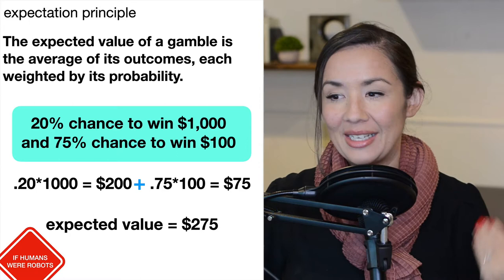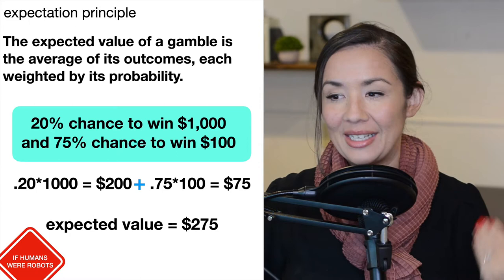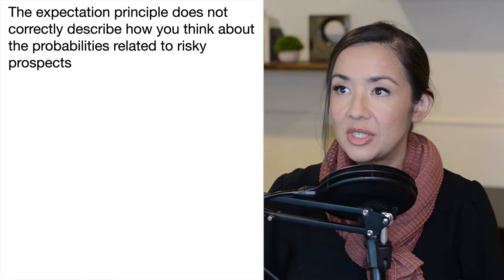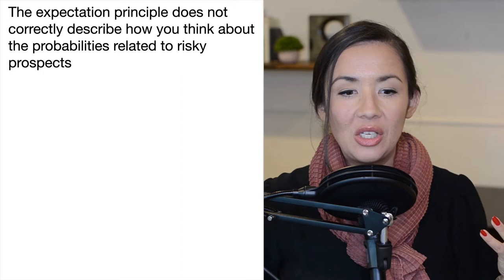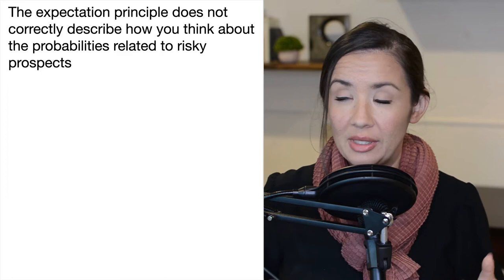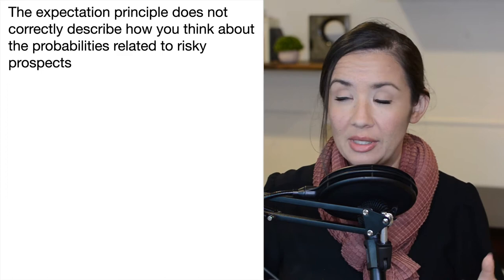If humans were robots, this is how we would calculate the expected value of a gamble. But the expectation principle does not correctly describe how we think about probabilities related to risky prospects. We don't think like robots. Instead, we use heuristics and apply value and emotion to different probabilities.